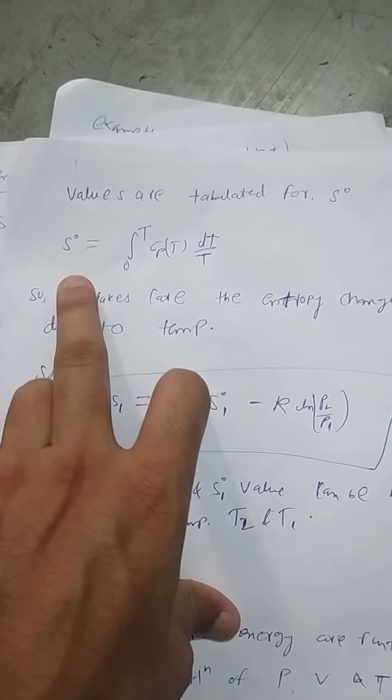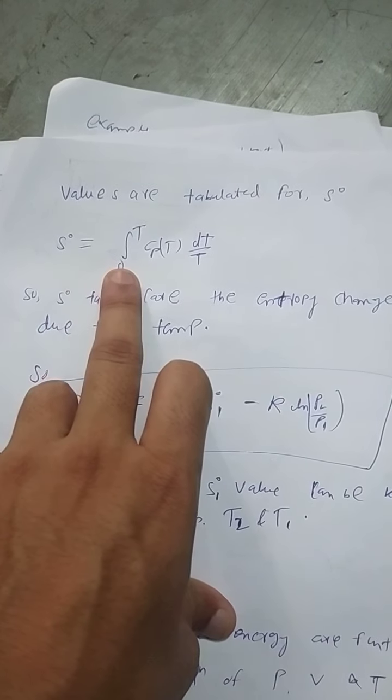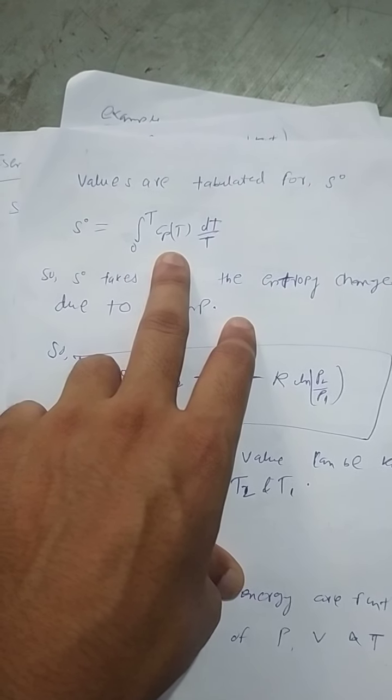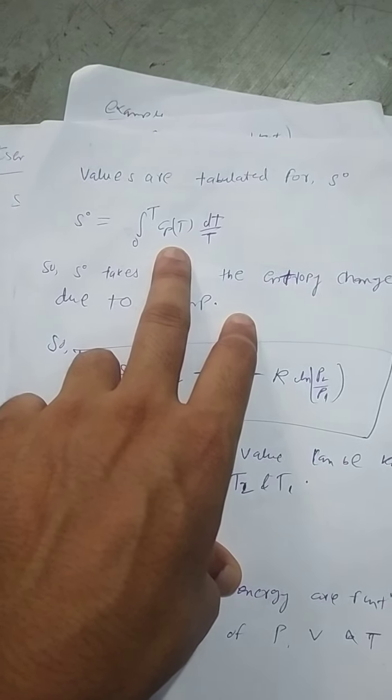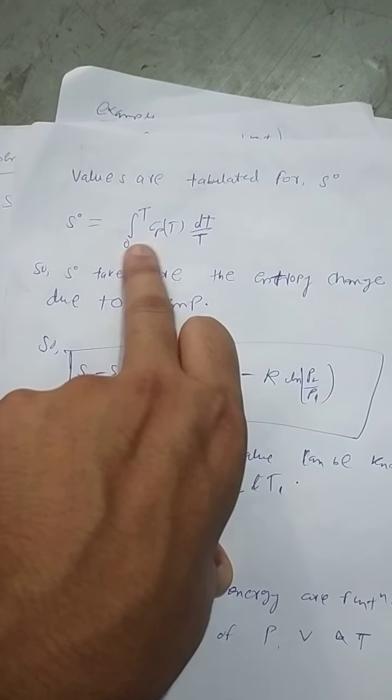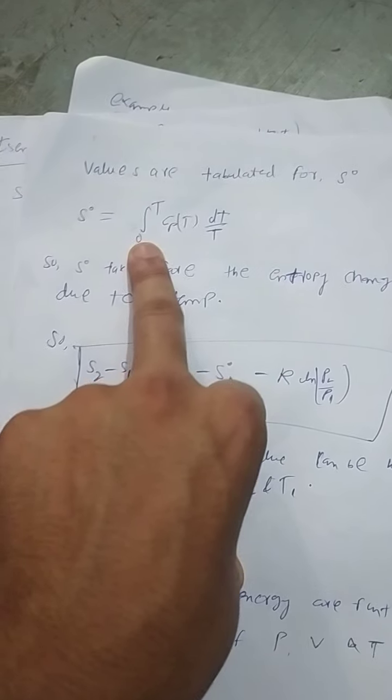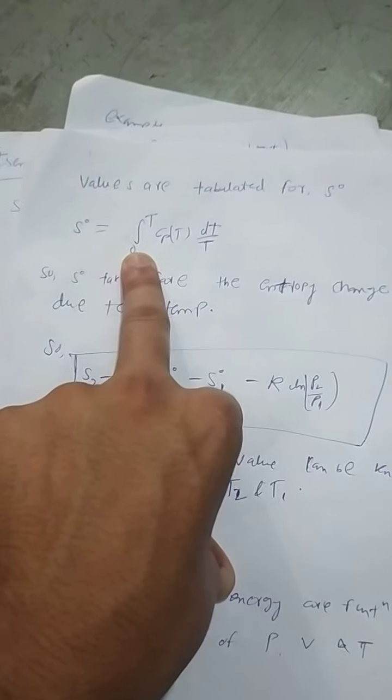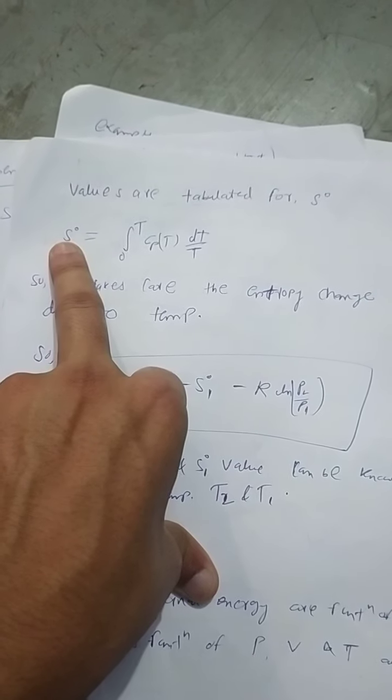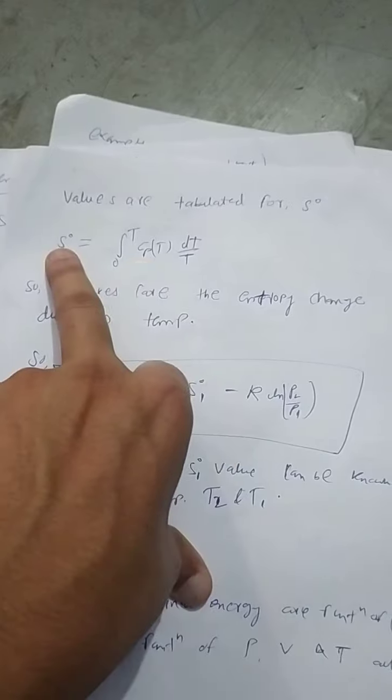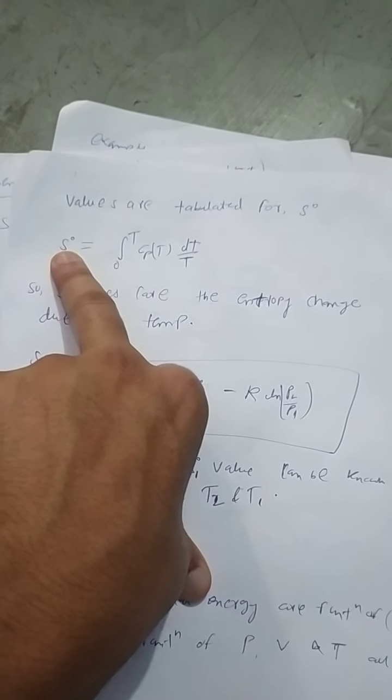This s0 term is already given in the table at different temperatures. It is integrated from zero to final temperature. Zero is taken as reference temperature, zero absolute temperature. It gives the value of this integral at temperature T because it is absolute temperature.